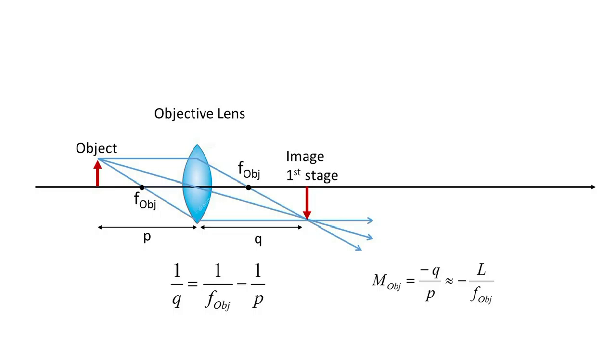Note that the closer the objective is brought to the object, the larger and more distant the image that is formed. There are two approximations frequently used for microscopes. One is that the object distance is equal to the focal length of the objective, i.e. P approximately equal to F. This is not precisely true, as the object is located just beyond the focal length of the objective.